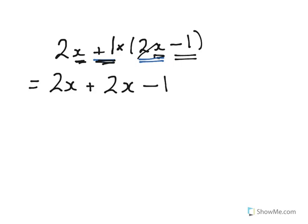So now I have 2x plus 2x. Well, I know that 2 plus 2 is 4. So 2x plus 2x must equal 4x minus 1. So I've now expanded those brackets. That means taken the brackets away and changed this expression into the form 4x minus 1.